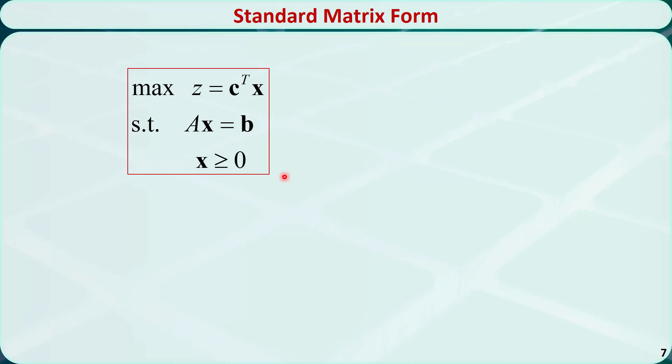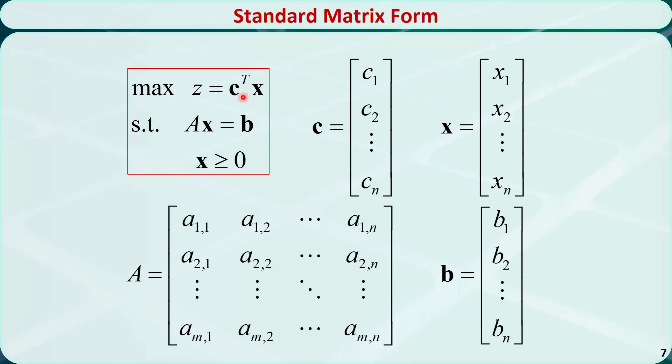The standard form can be written in the matrix form as well, where c represents a vector of objective function coefficients, A is the matrix of the constraint coefficients, and b is the right-hand side of the constraints.